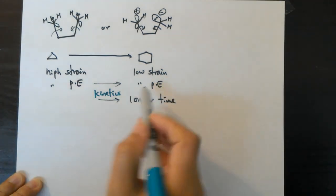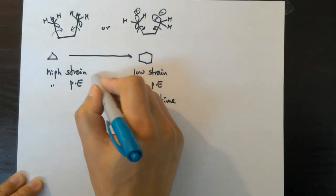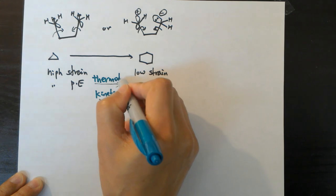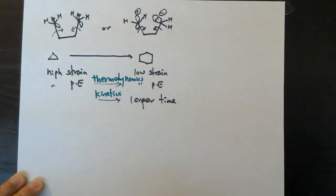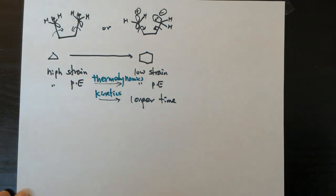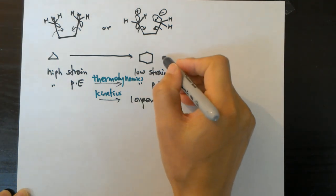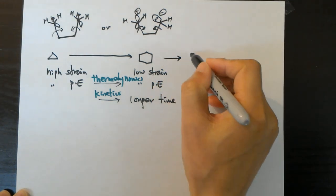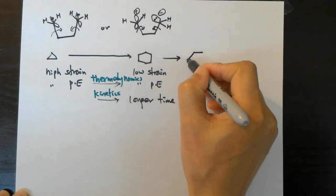But in terms of thermodynamics, ring formation is favored because the product is more stable. In some later videos, I'll also discuss bigger rings like seven- and eight-membered rings.